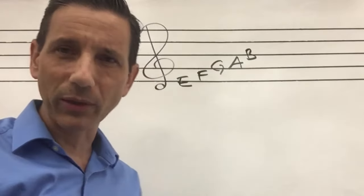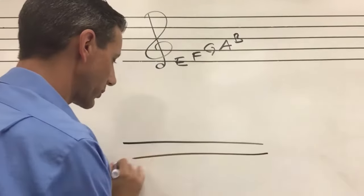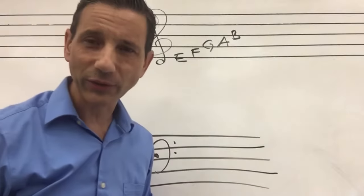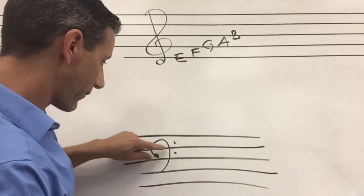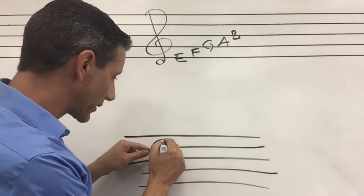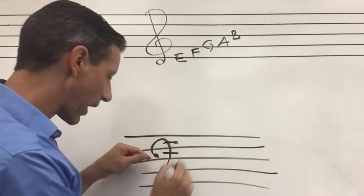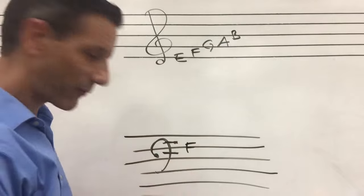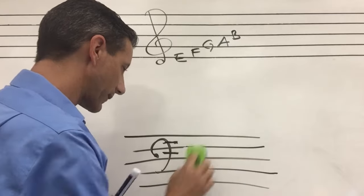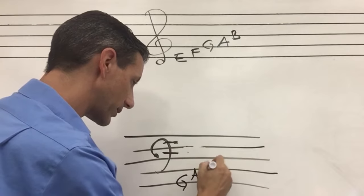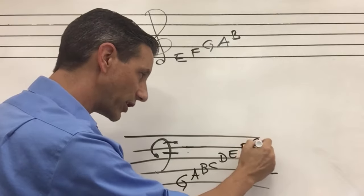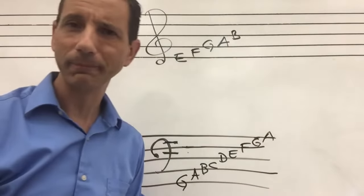The bass clef is the lower clef that most people use. The bass clef instruments are baritone, bass, bassoon, cello, euphonium, piano, trombone, tuba, and voice (tenor and bass). The bass clef shows you where F is — the F is right here between those two dots. It's like a fancy F with the dots. So if we go up and down from there, the bottom line on bass clef is G: G, A, B, C, D, E, F on the fourth line up, and then G, with A as the top line.